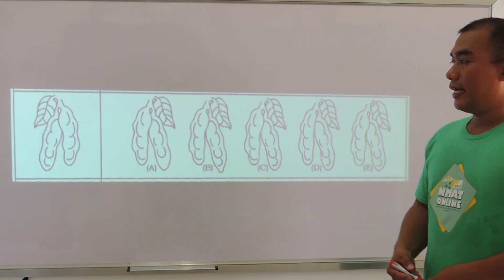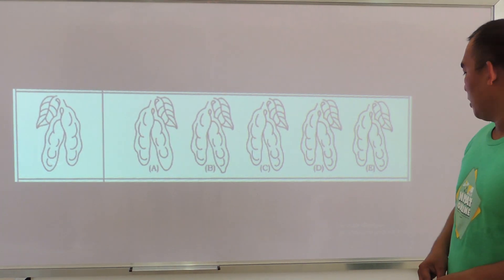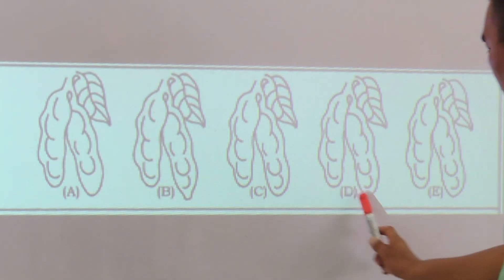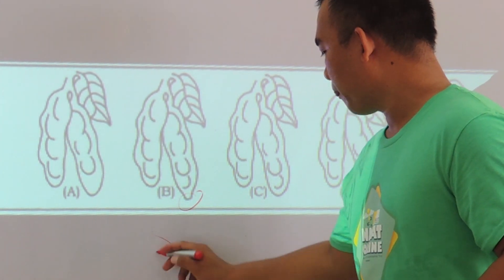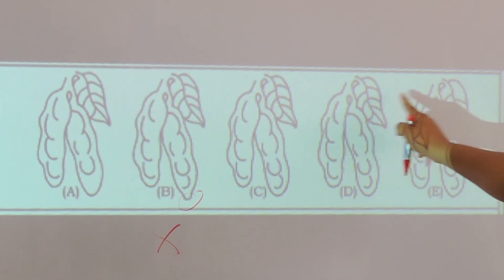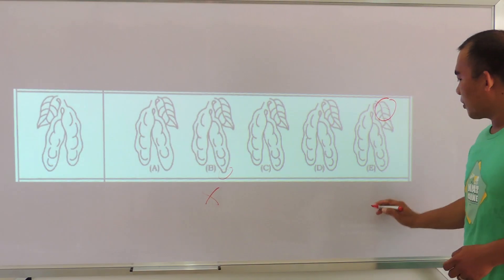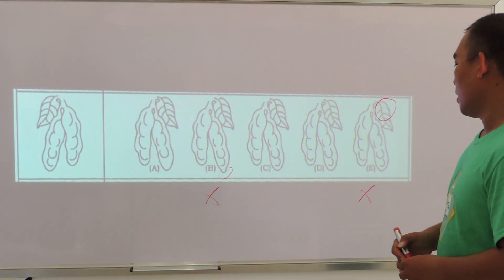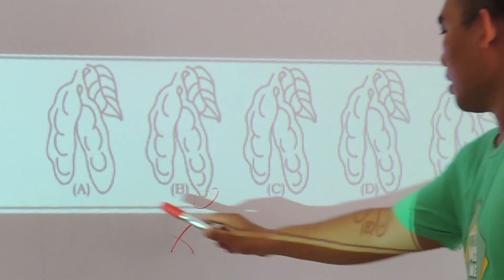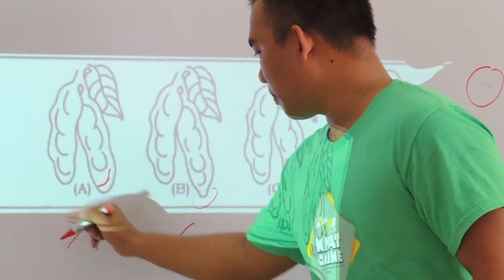For the third example with the original figure, I am going to apply the process of elimination again. Focusing on the lower part of the figure, I could eliminate option B. Next, focusing on the left side, option B would again be eliminated. Focusing on another part, option A looks like a good option, so we proceed to compare C and D.